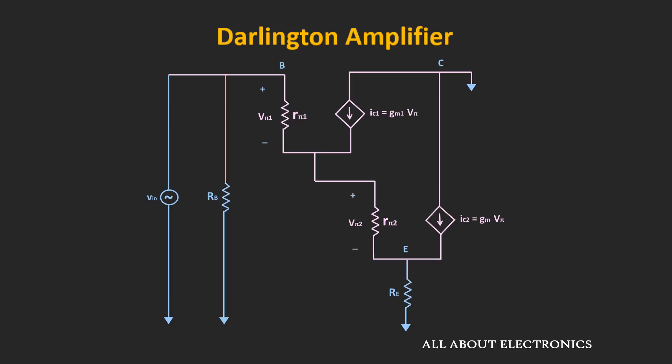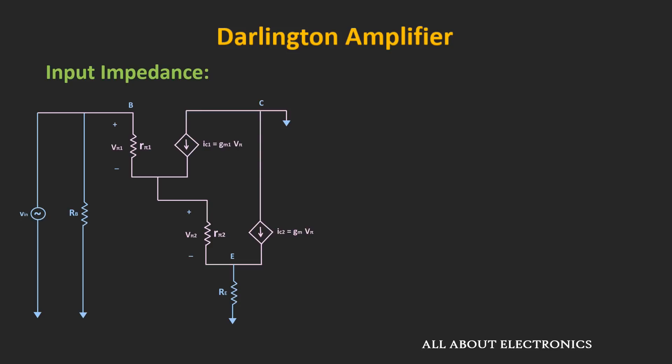Because of its very high β, this Darlington amplifier provides very high input impedance. Let's find the input impedance by first finding the equivalent impedance seen through the base terminal — let's call that Zb. The voltage at this node is equal to Vb, which is equal to the input voltage. The current into this base terminal is Ib, so the ratio of Vb to Ib gives us the base resistance.